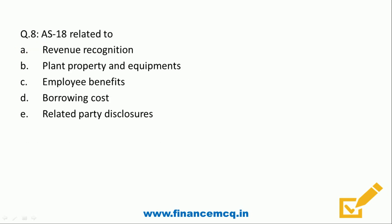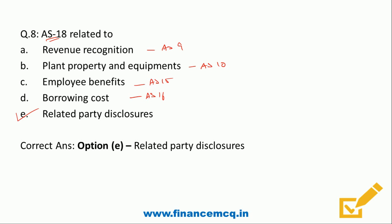Question 8: AS 18 relates to: A) Revenue Recognition, B) Plant, Property and Equipment, C) Employee Benefits, D) Borrowing Cost, E) Related Party Disclosure. AS 18 relates to Related Party Disclosure. Borrowing Cost is AS 16, Employee Benefits is AS 15, PPE is AS 10, and Revenue is AS 9. So the correct answer is Option E, Related Party Disclosure.